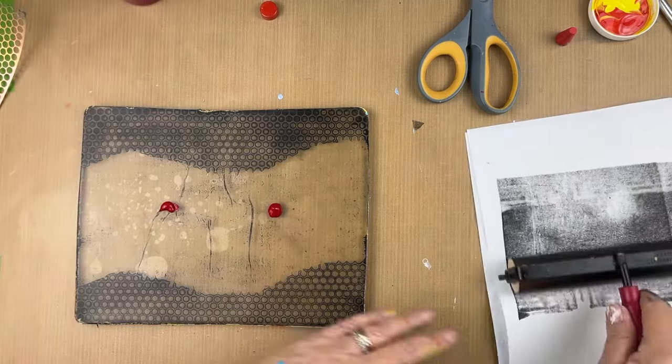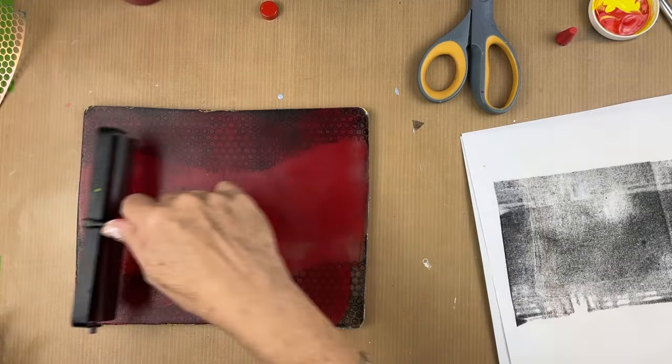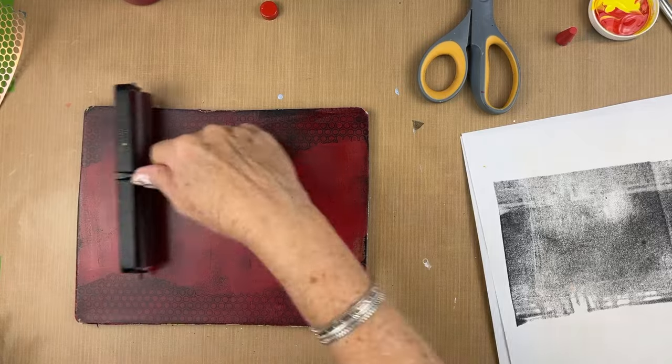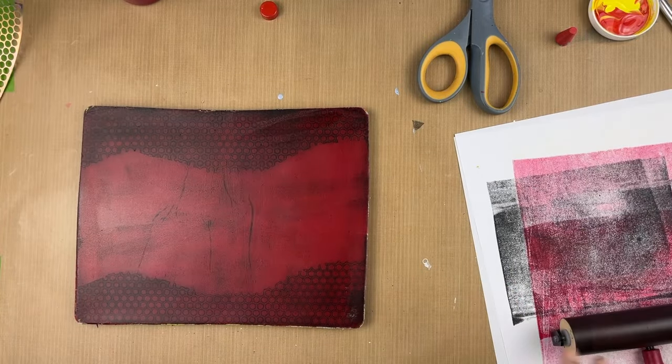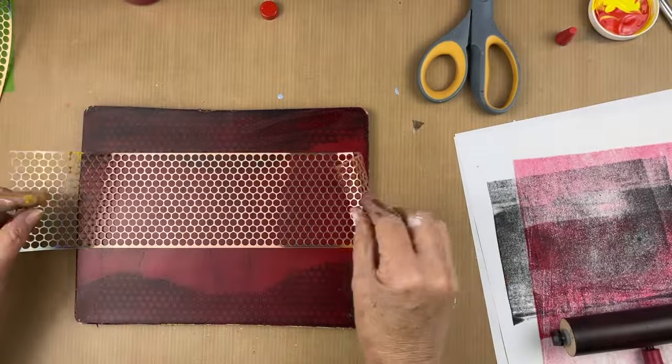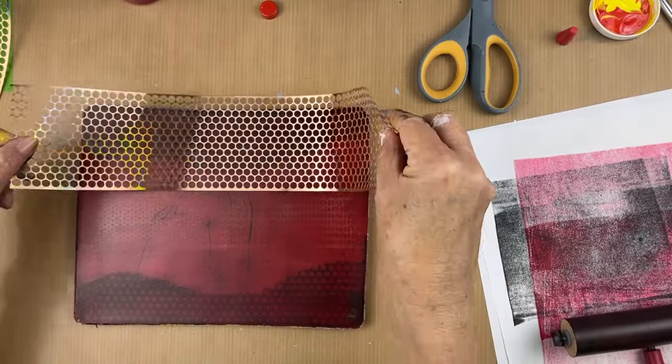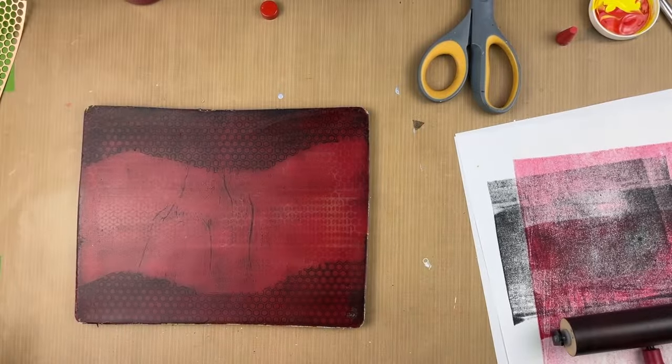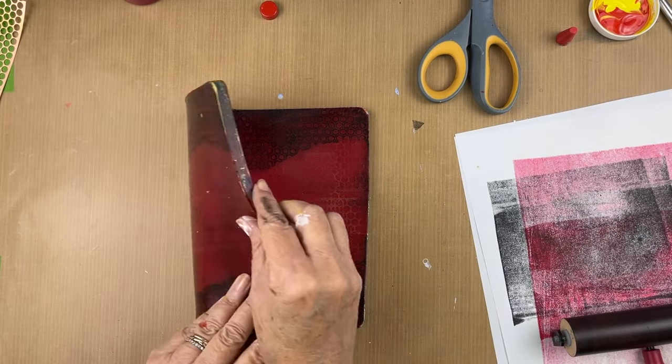Now this is quinacridone red. I'm going to use that for my second layer. I'll take another piece of Punchinella and lay it down like a stamp almost for some additional texture. It just lifted some of that quinacridone red.